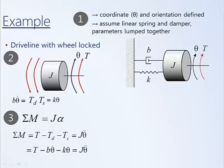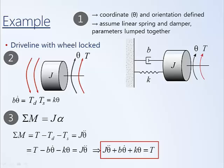It is typical to gather like terms on the same side. Moving the negative B theta dot to the right makes it positive; the negative K theta also becomes positive on the right. Since this is a passive system, we would expect all coefficients of like terms to have the same sign, indicating roots of the characteristic equation have negative real part — exponential decay, not growth. The signs are consistent, giving us confidence the result is correct.